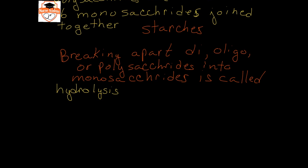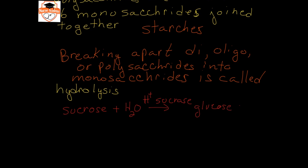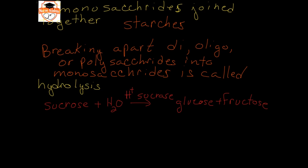For example, if we take sucrose and add water in the presence of acid (H+) or sucrase — an enzyme that specifically breaks apart sucrose — we get our glucose and fructose monosaccharides back. This is called hydrolysis because the mass difference between sucrose and glucose plus fructose equals the mass of water (two hydrogens and one oxygen), so we are essentially adding water to sucrose to get glucose and fructose.